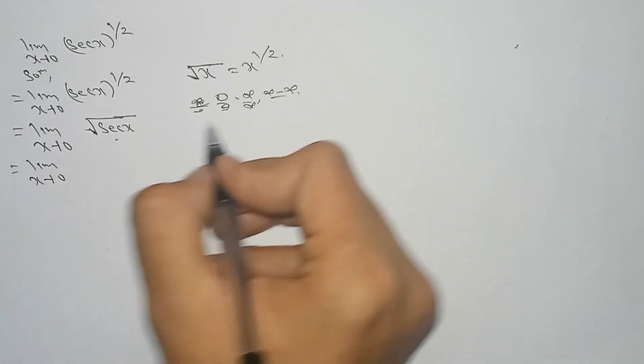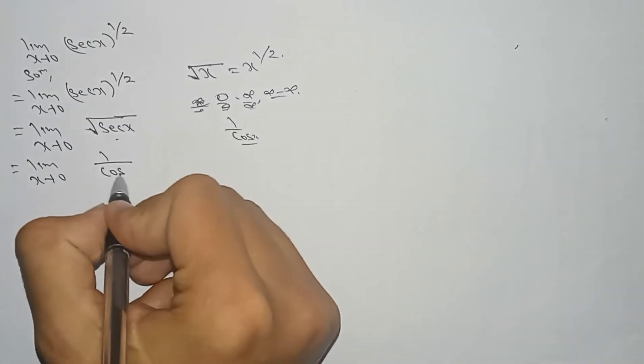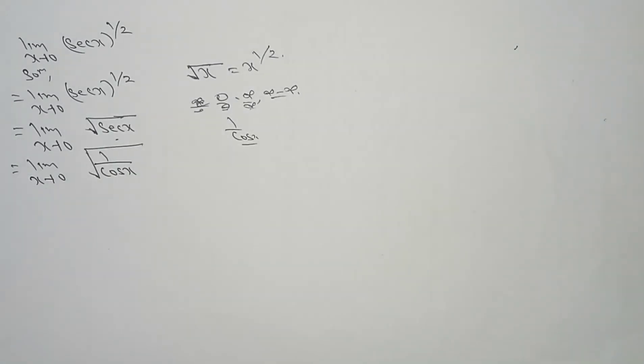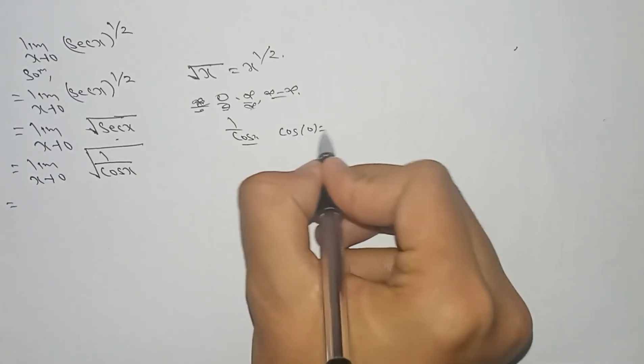Sec x means 1 by cos x - this is the formula, so this can be written as 1 by cos x. Now if we put, we have cos 0 means 1.